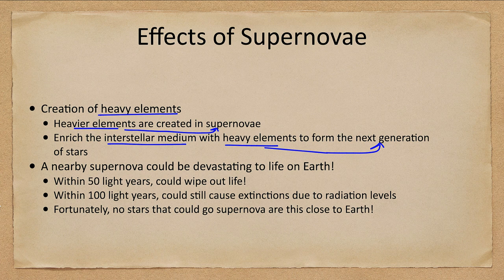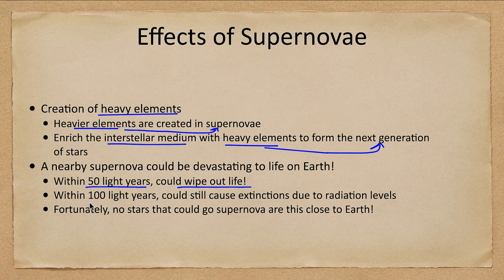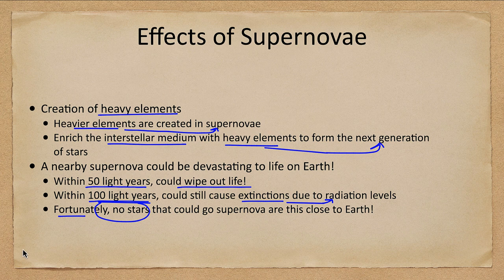How dangerous could a supernova be? Within 50 light years, if a supernova were to occur, it could wipe out life on Earth — that's how much energy is released even at that distance. Within a hundred light years we could have mass extinctions due to increased radiation levels. Fortunately, there are no stars that could go supernova this close to Earth, but that doesn't mean a supernova in the past did not lead to some of the extinctions that have occurred over Earth's history.